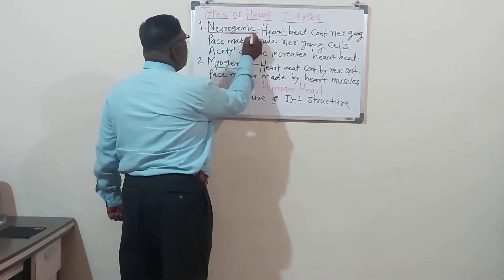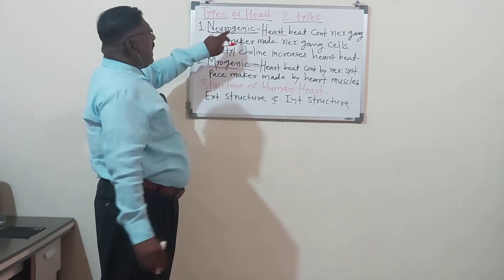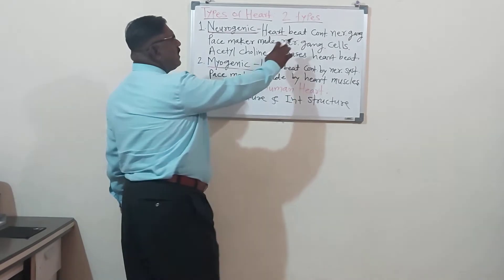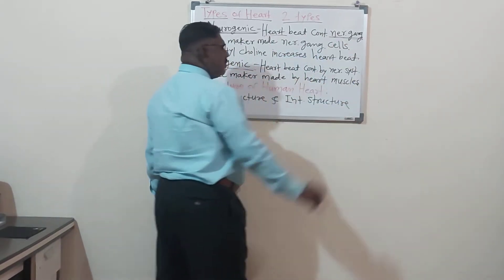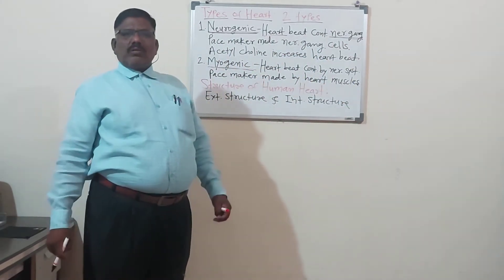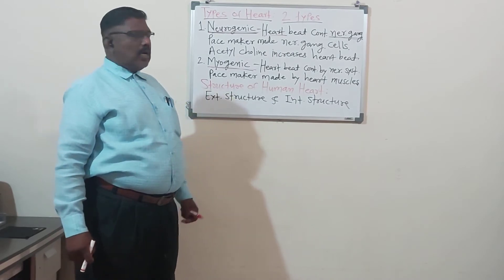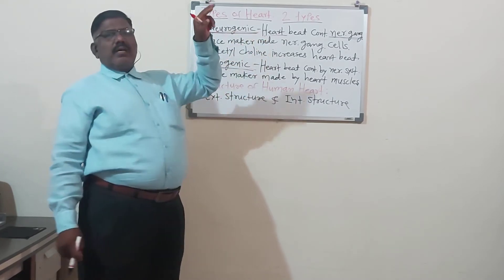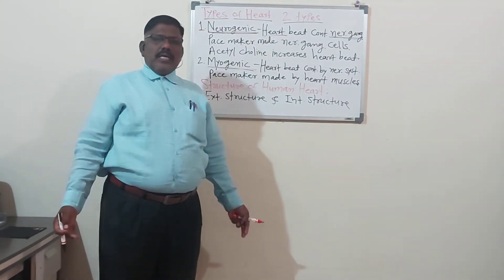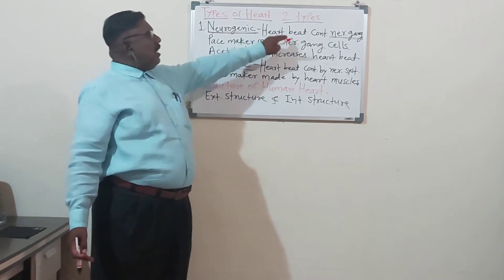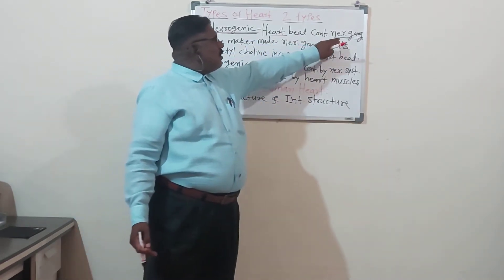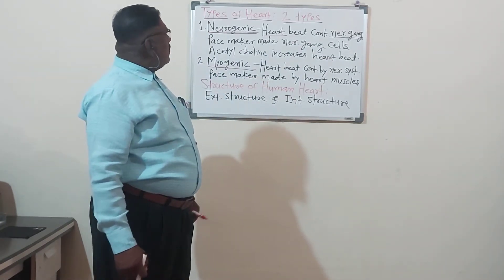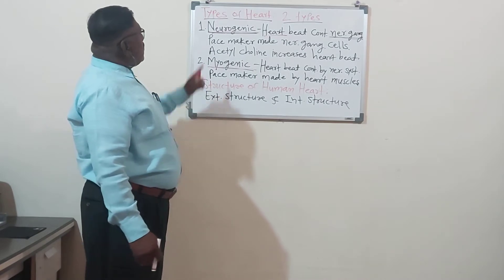The first type is the neurogenic heart. In this type of heart, the heartbeat is controlled by the nerve ganglion. Such a type of heart is called the neurogenic heart — the heart in which the heartbeat is controlled by the nerve ganglion.